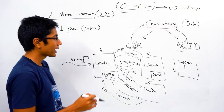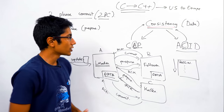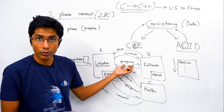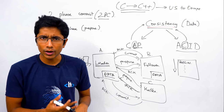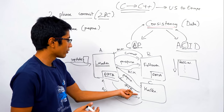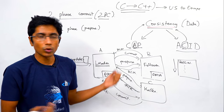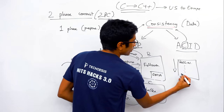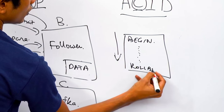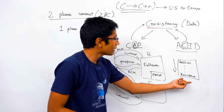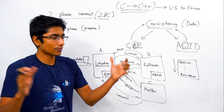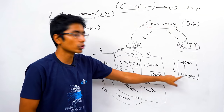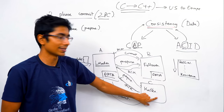If the leader doesn't get all acknowledgements back, it assumes some of the systems that received the prepare request have failed — maybe a timeout or a negative response. In that case, the leader fails the transaction and you get a rollback. As a follower, you keep a time limit: if the leader's commit message doesn't arrive within, say, five or six minutes, you do a rollback and your system stays consistent.